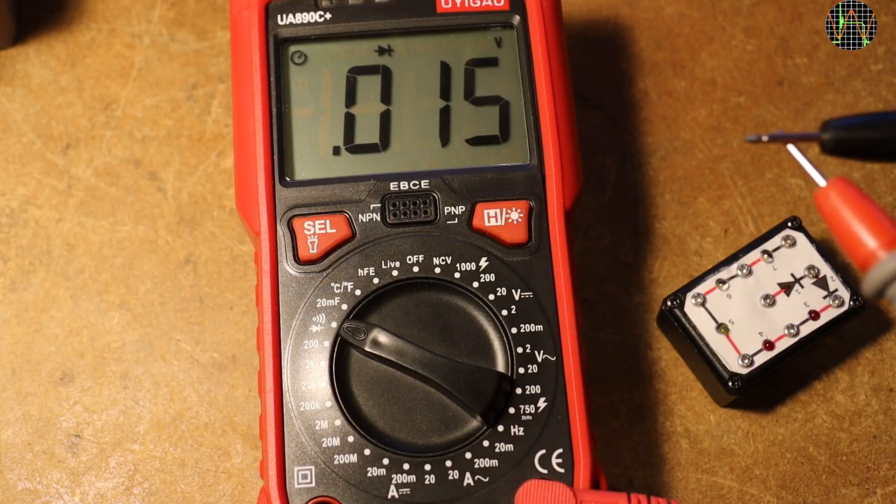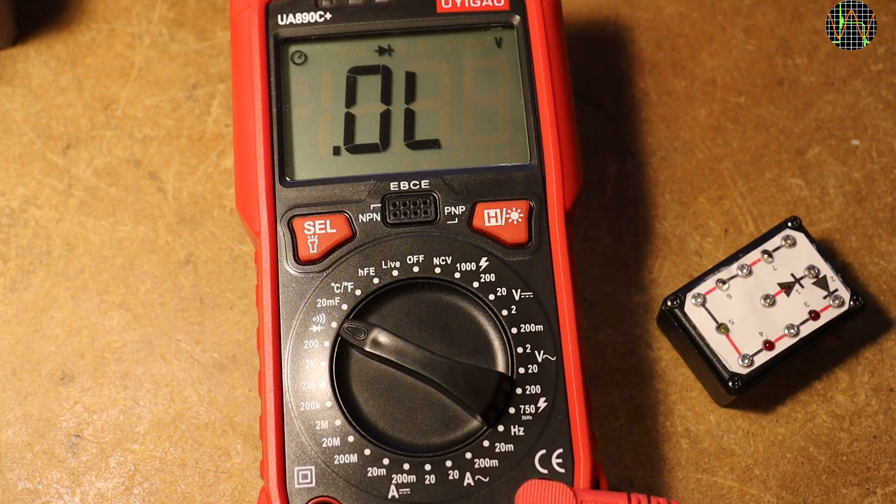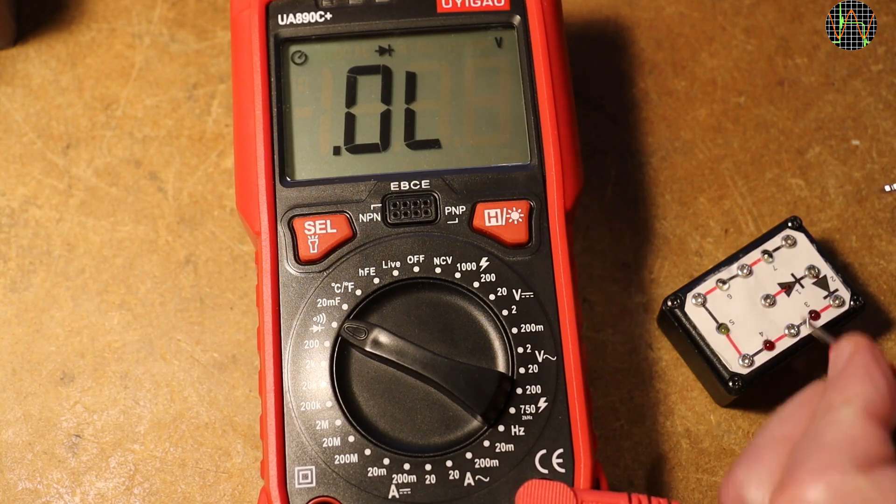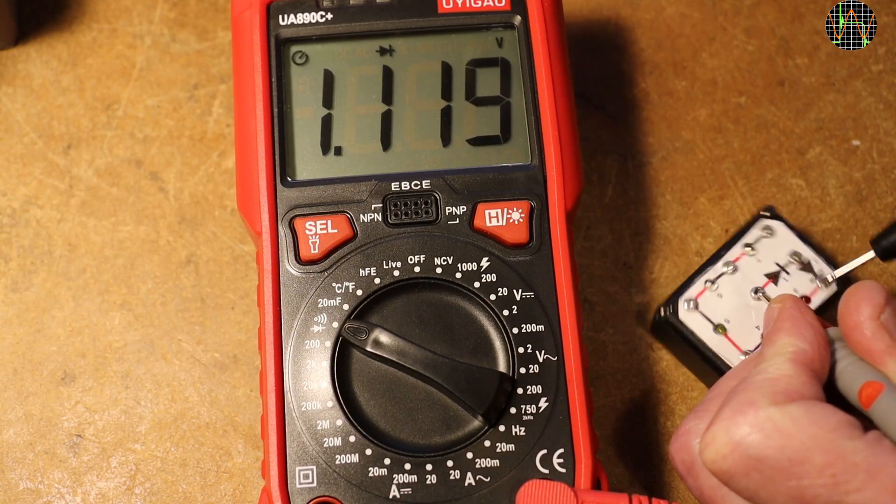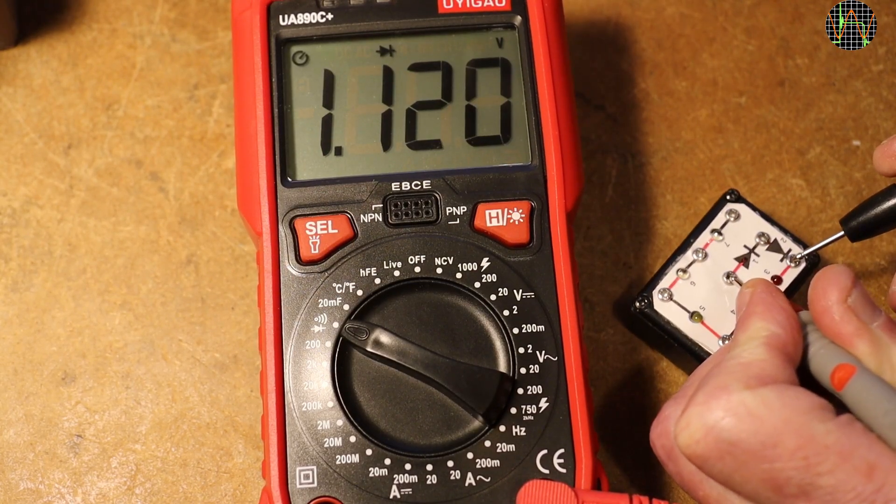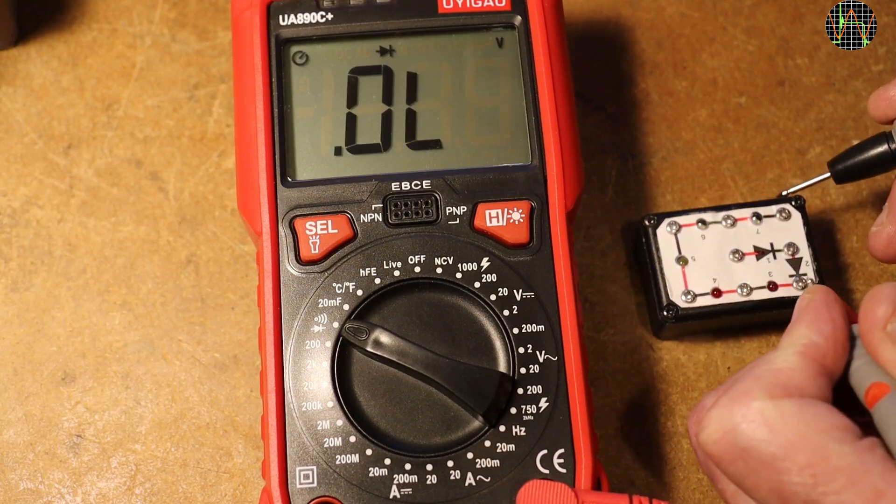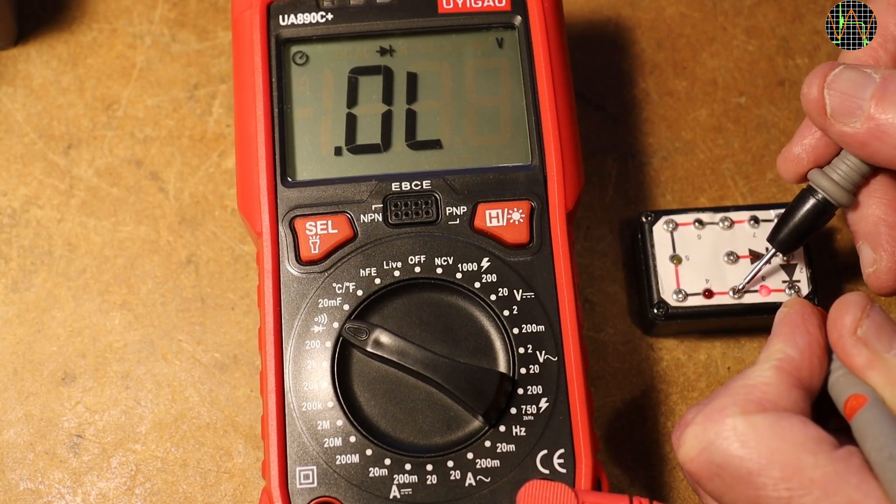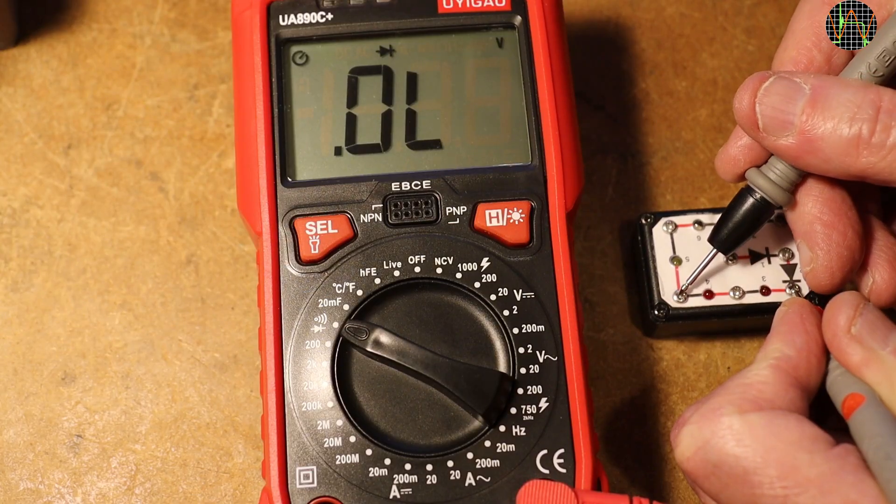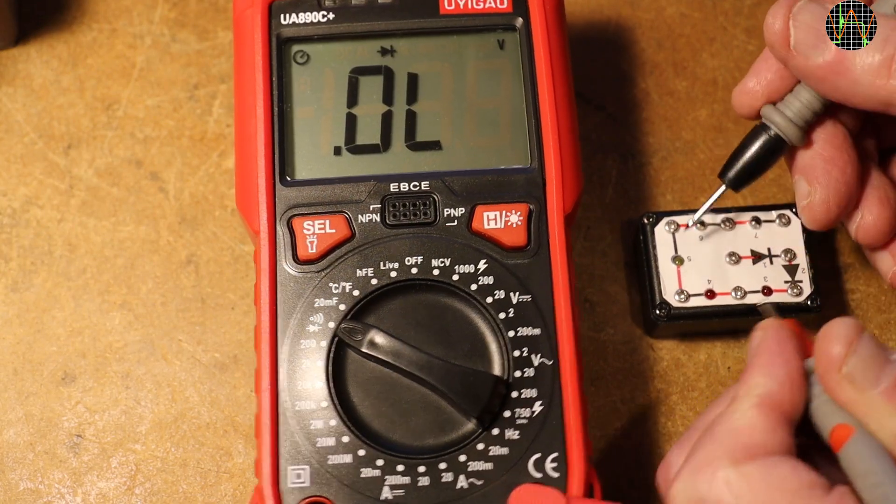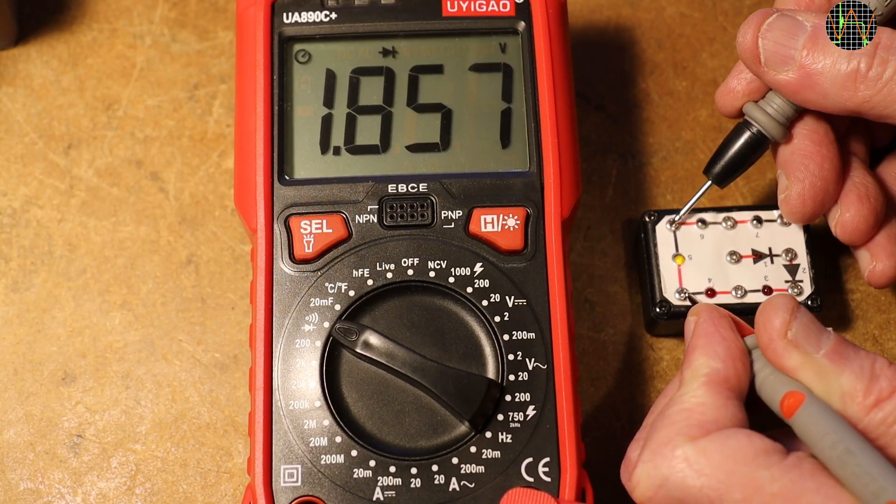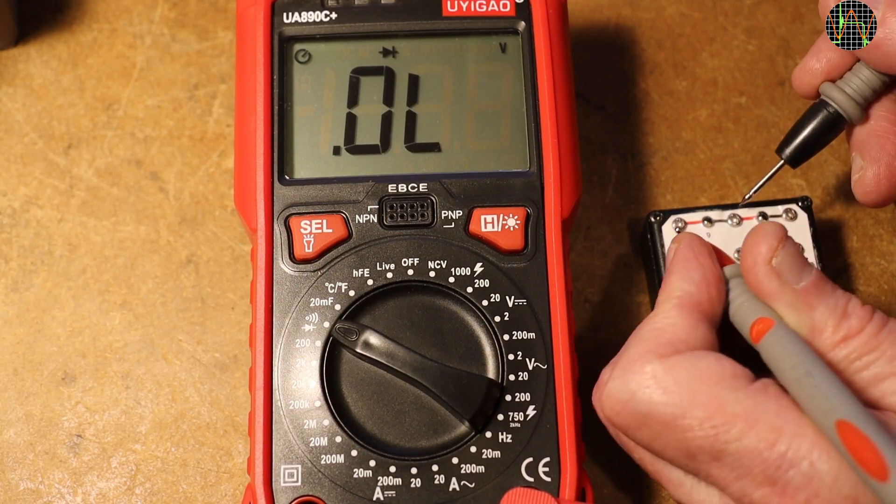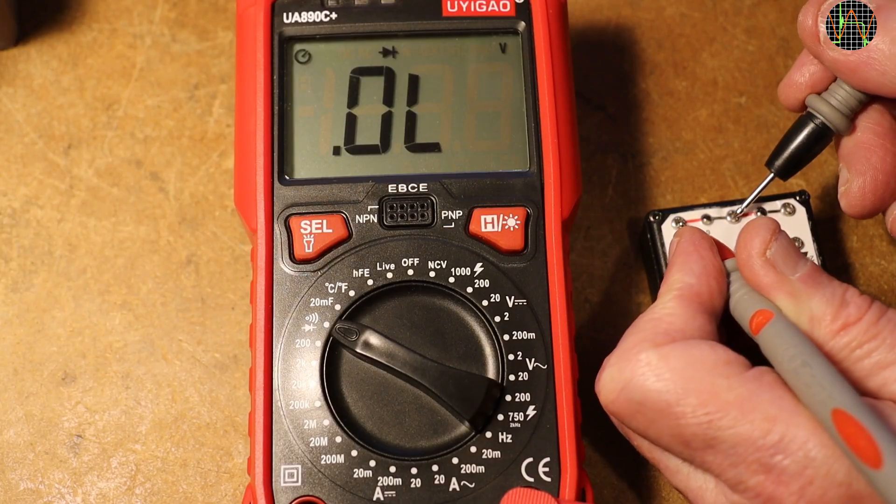Diode mode. An open diode is shown OL and as short as 0. A single silicon diode is fine. And so are two in series. A single red LED lights and a forward voltage is shown. Two red LEDs in series cannot be tested. A yellow LED lights and a forward voltage is shown. A white LED cannot be measured.